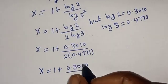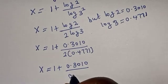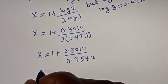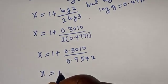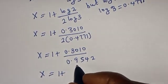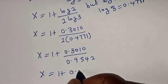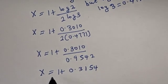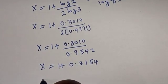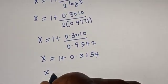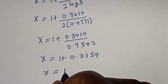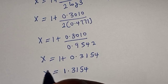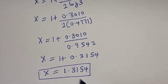x is equal to 1 plus 0.3010 over 0.9542. Then x is equal to 1 plus, if you divide this by this, we have 0.3154. And if you add these two together, we have x is equal to 1.3154, and this is our final answer.